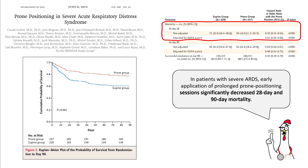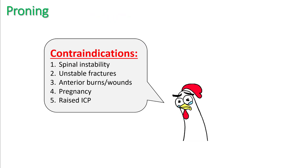In moderate to severe ARDS with a PF ratio less than 150, proning has shown to be really useful. This was demonstrated in the PROSEVA study, which showed a hazard ratio of 0.39 with respect to mortality when comparing prone and supine groups. Contraindications to proning include spinal instability, unstable fractures, anterior burns, pregnancy, and raised ICP.